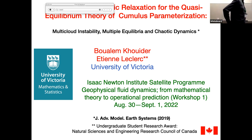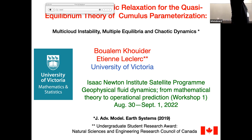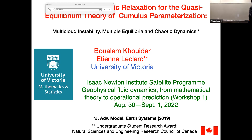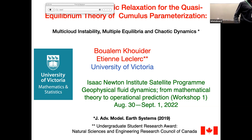Tropical convection has all the ingredients Tobias was talking about: it's multi-scale, it's hard, and it's important for the climate system in general. Today I'm going to talk about towards stochastic relaxation for the quasi-equilibrium theory of cumulus convection. By the end of the talk you'll hopefully understand what I mean by all these words. This work is joint with student Etienne Leclerc, done as an undergrad summer research project.